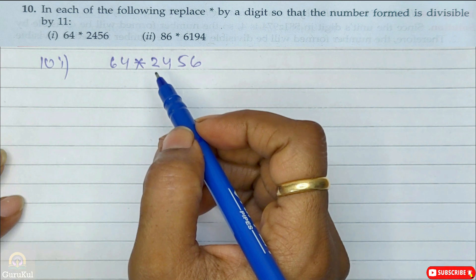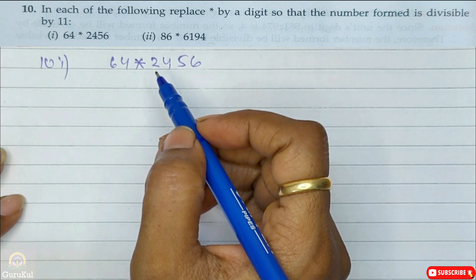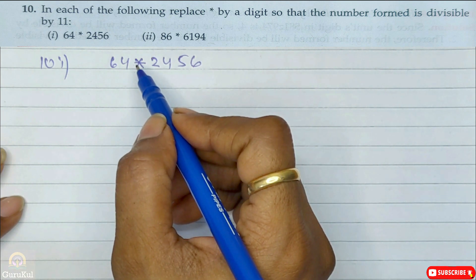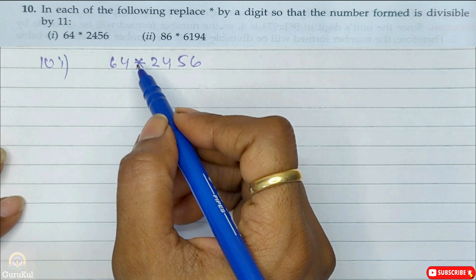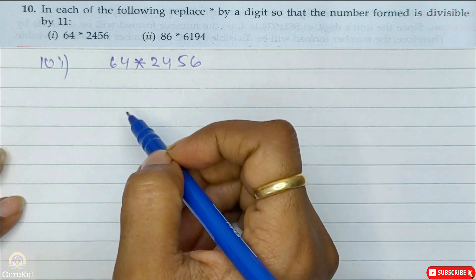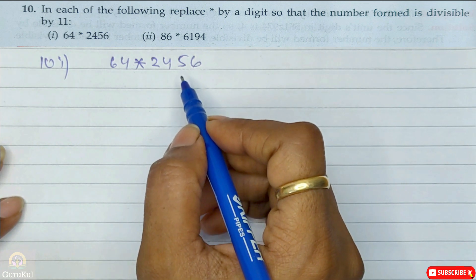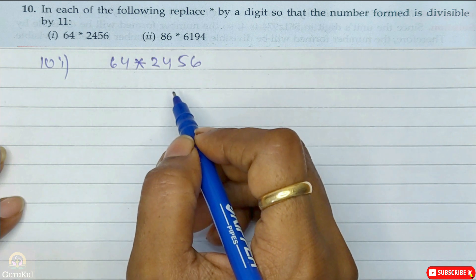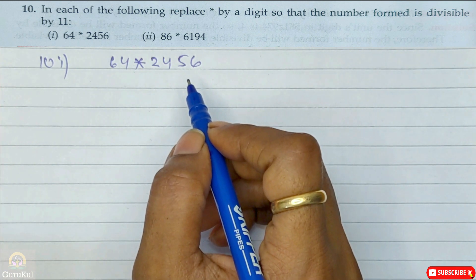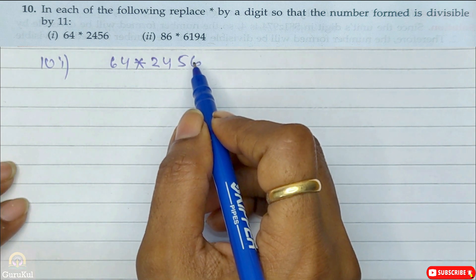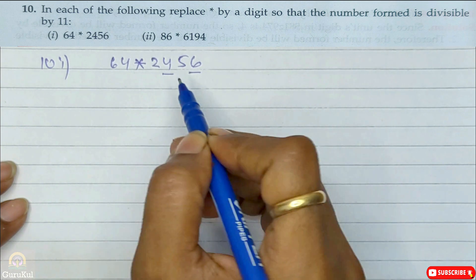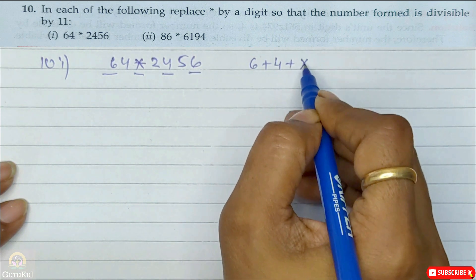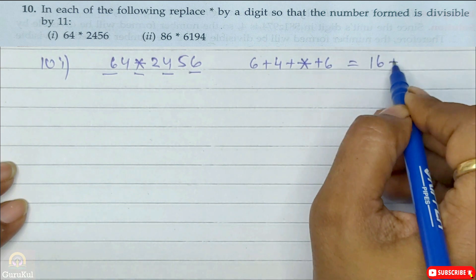Now question number 10: replace star by a digit so that the number formed is divisible by 11. The divisibility rule for 11: find the sum of digits at odd places starting from the unit place, then the sum of digits at even places starting from the tens place, then find the difference. For the first number, digits at odd places are 6, 4, star, 6 — so 6 plus 4 plus star plus 6 gives us 16 plus star.